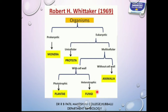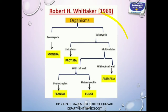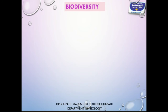Kingdom Animalia organisms are eukaryotic, multicellular, and without a cell wall. The study of the sum total of all these living organisms is called biodiversity — a collection of varieties of all forms of life, from Monera to Kingdom Animalia.